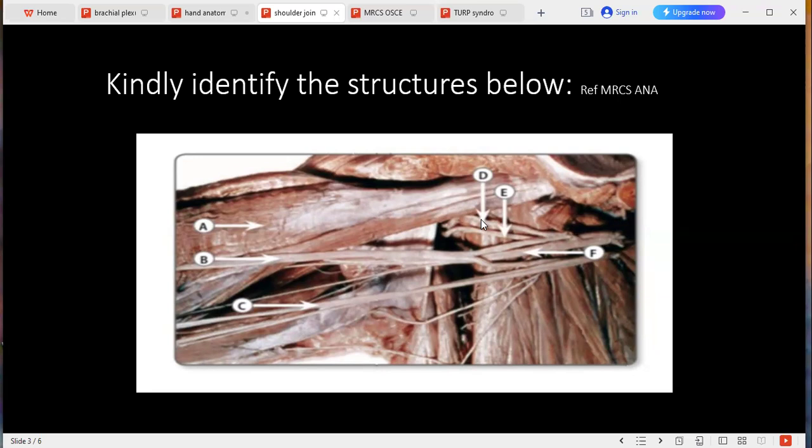The upper, middle, and lower trunk. Okay, which is further divided. Yes, and these trunks are further divided into divisions, anterior and posterior divisions. Yes, and these divisions give rise to how many cords? These further give rise to the cords, like lateral, medial, and posterior cords according to their positions present in relation to the second part of the axillary artery.